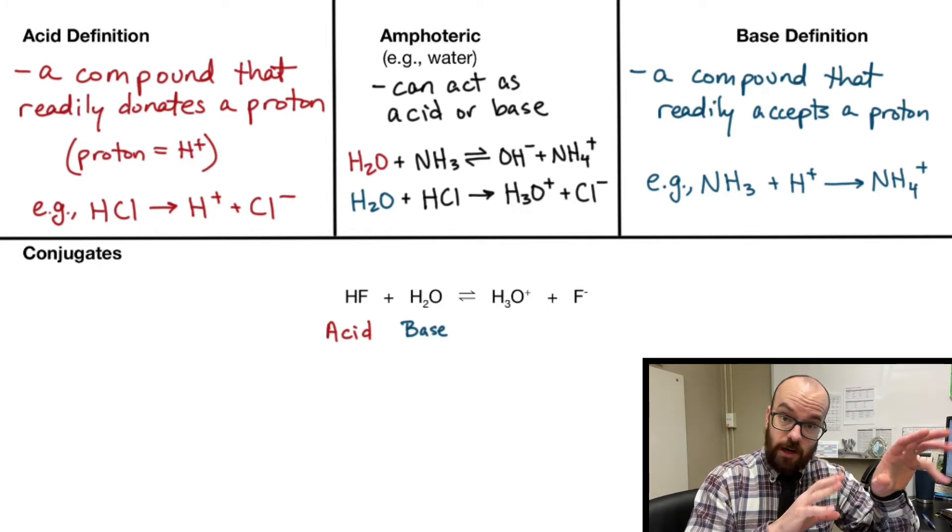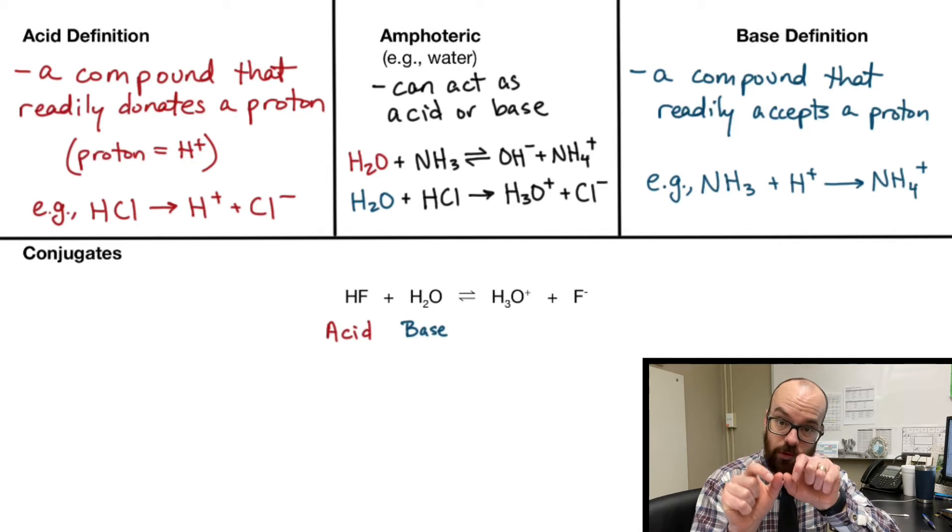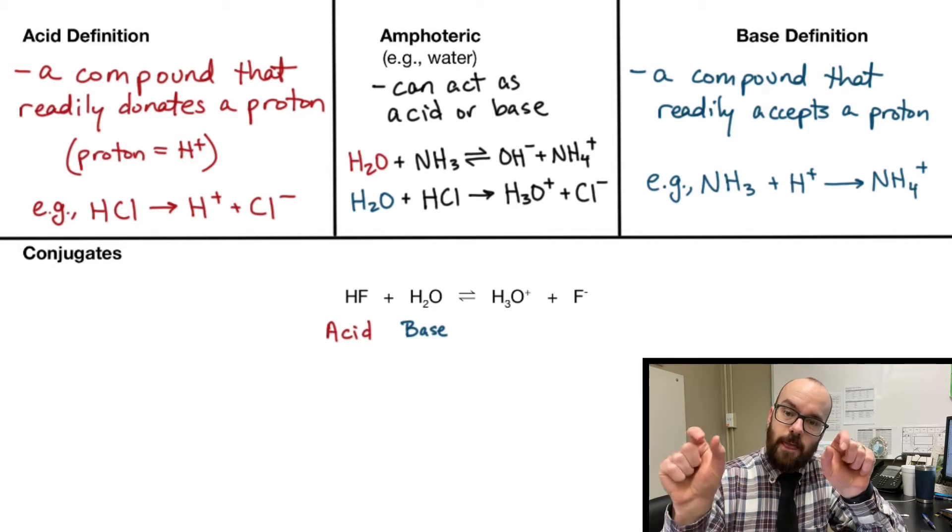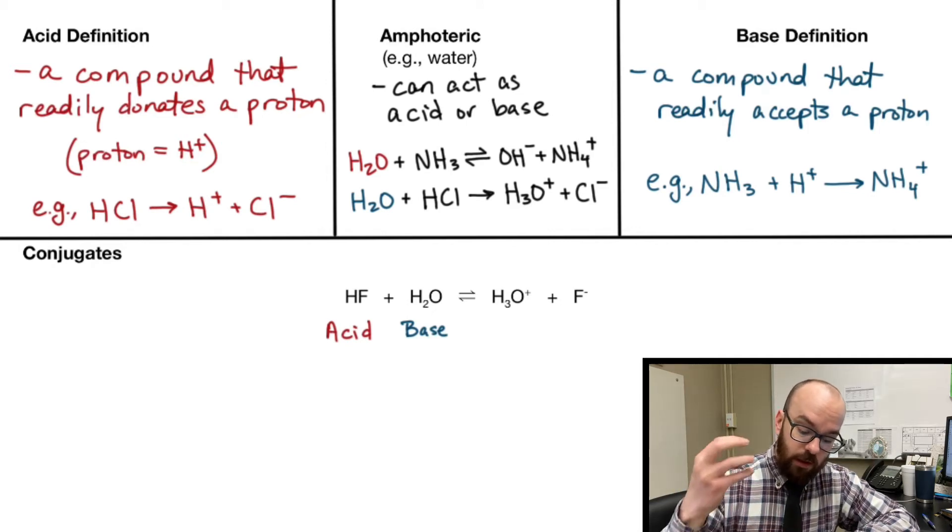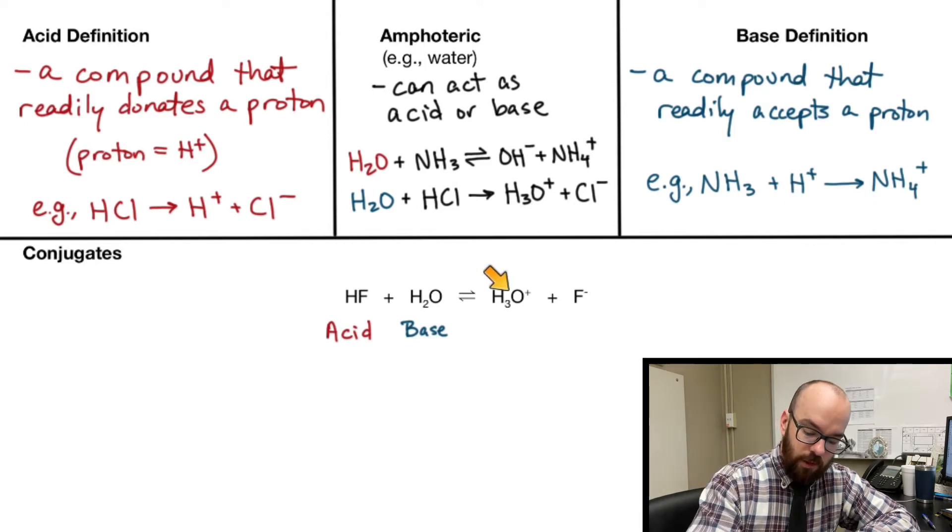It is an equilibrium reaction because hydrofluoric acid is a weak acid. That means in solution we'll have some HFs, but some of those, not all—that would be a strong acid—just some of those HFs will dissociate to become H+ and F-. Now, where does the H+ go? It's going to go to the H2O and become H3O+.